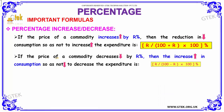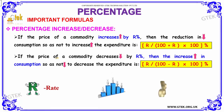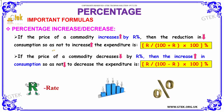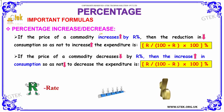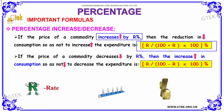Moving on, we can use percentage to calculate the increase and decrease in expenditure. If the price of a commodity increases by r percentage, then the reduction in consumption so as not to increase the expenditure is given by the formula: r by (hundred plus r) into hundred percentage.